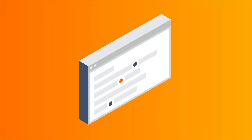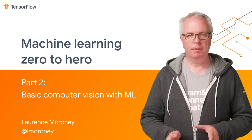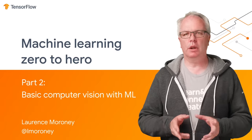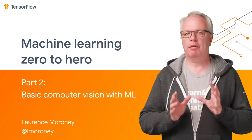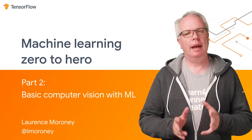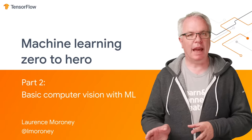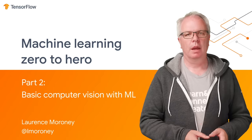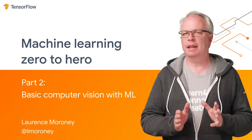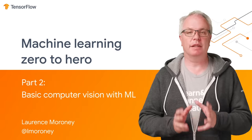Hi everyone, and welcome to episode two of TensorFlow Zero to Hero. In the last episode, you learned about machine learning and how it works. You saw a simple example of matching numbers to each other and how, using Python code, a computer could learn through trial and error what the relationship between the numbers was. In this episode, you're going to take it a little further by teaching a computer how to see and recognize different objects.